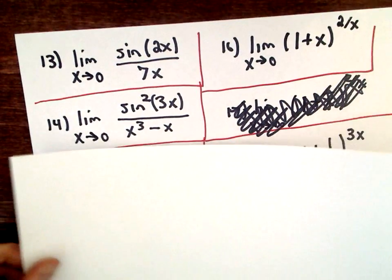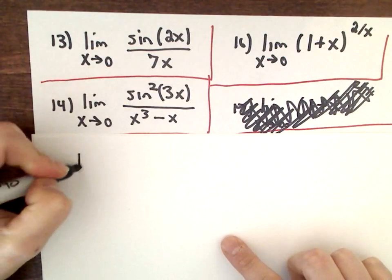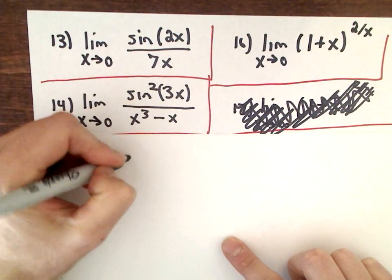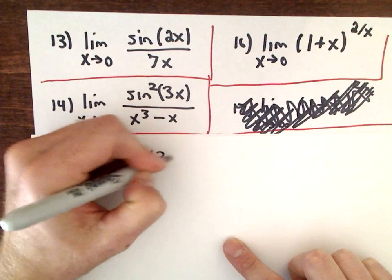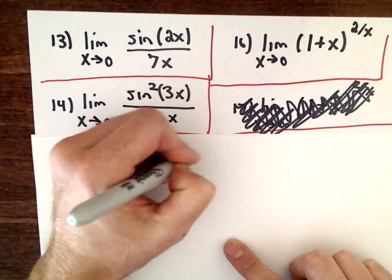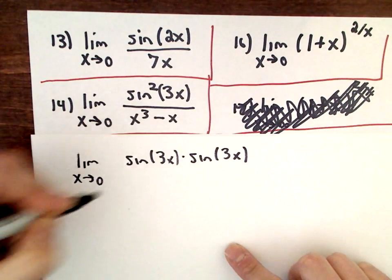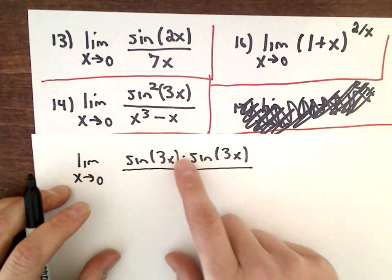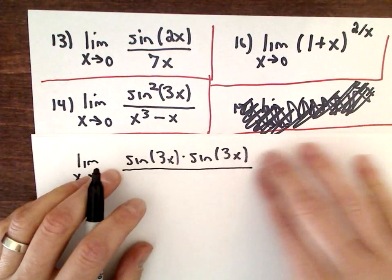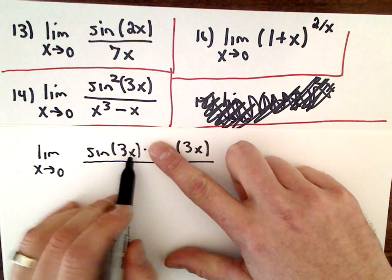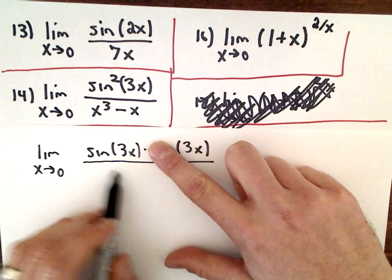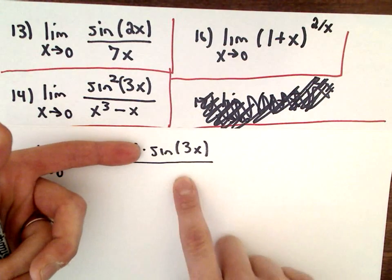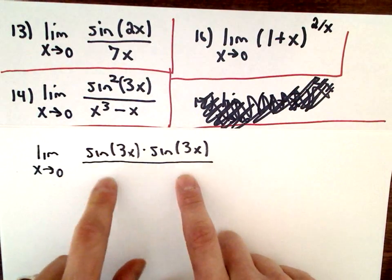Number 14. I've got the limit as x approaches 0 of sine squared of 3x. Sine squared 3x. I'm going to rewrite that. Sine of 3x multiplied by sine of 3x. You don't have to do this. Maybe it would make it a little bit clearer. So I start thinking, maybe I'm going to do this thing where I make a couple different fractions. Sine of 3x, underneath that fraction eventually I would want a 3x. And if I break it up underneath this one, I would also want a 3x.